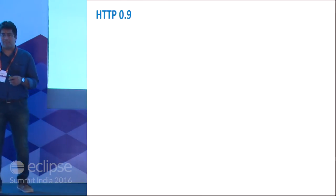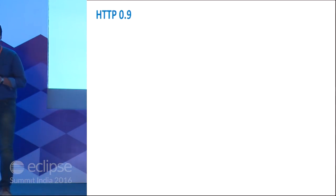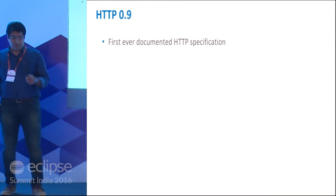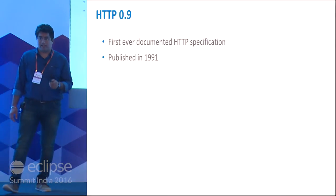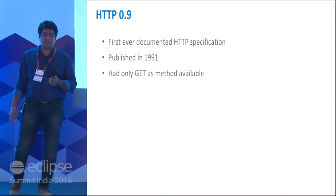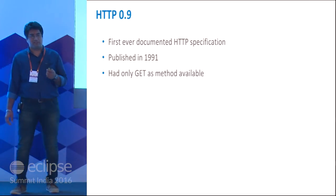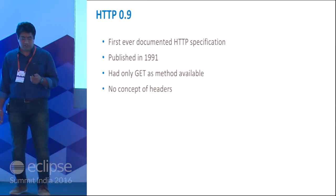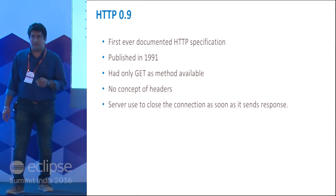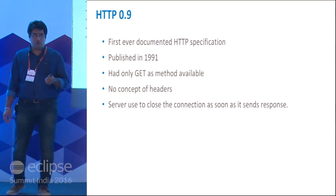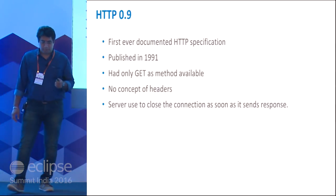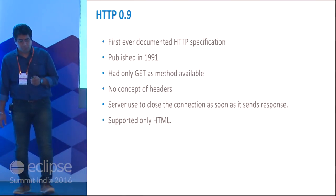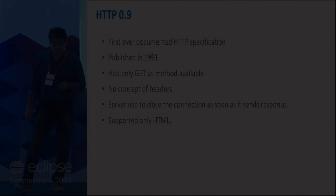We started with HTTP 0.9 — this was the first published recommendation of HTTP. It came in 1991 and had only a GET method available, so what the client could do is just shoot a GET request, get a response from the server, and close the connection. There was no concept of headers. HTTP could do nothing over there at that point of time. It had only basic support of HTML, no media contents, nothing.